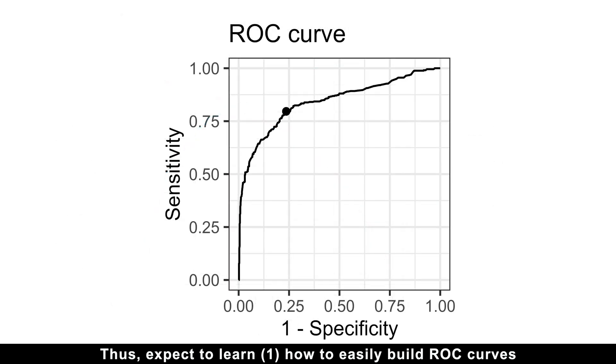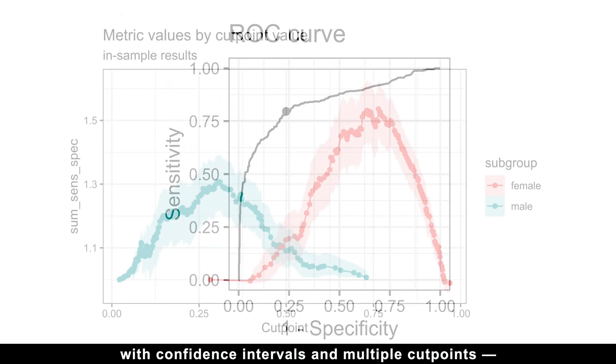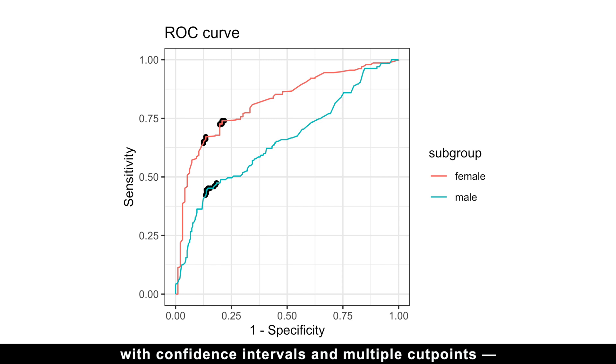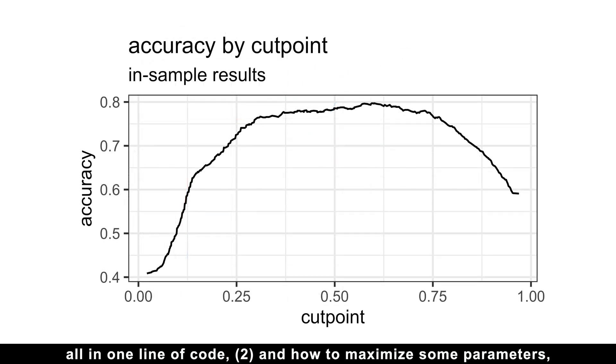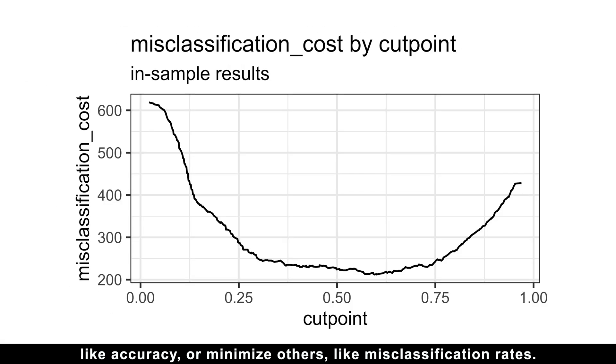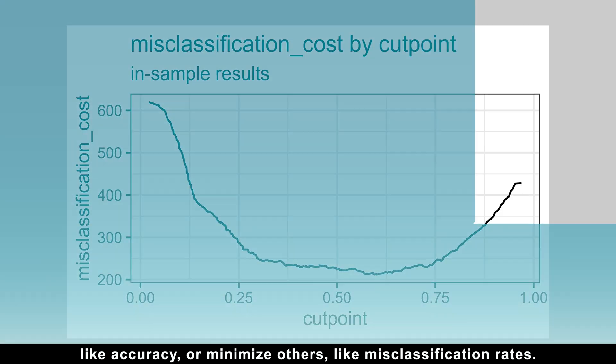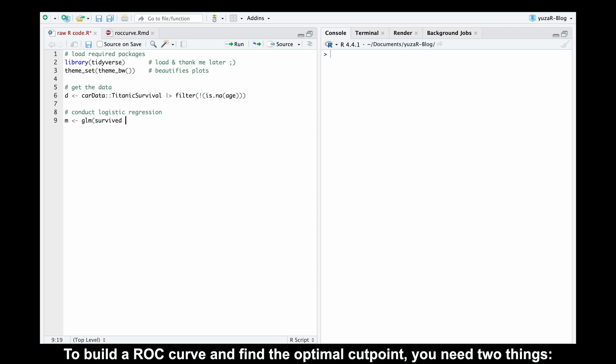Thus, expect to learn how to easily build ROC curves with confidence intervals and multiple cutpoints, all in one line of code, and how to maximize some parameters like accuracy or minimize others like misclassification rates. To build the ROC curve and find the optimal cutpoint, you need two things.